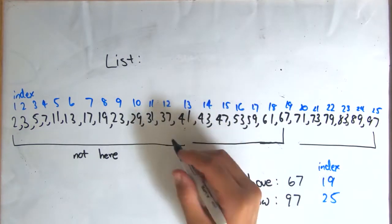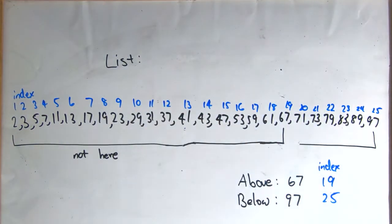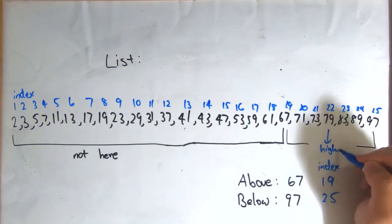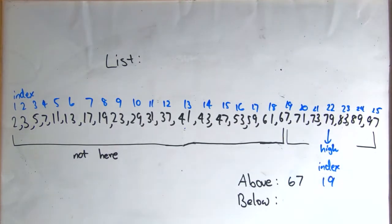Now 73 is still larger than 67, so next we will look at the midpoint of these two numbers. Now the midpoint between the 19th and 25th number is the 22nd number, which is 79.